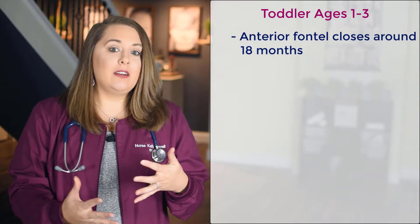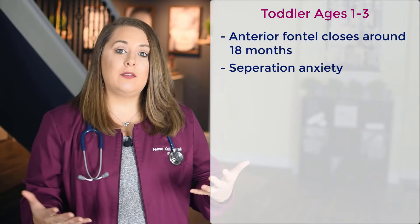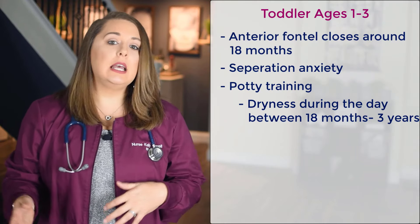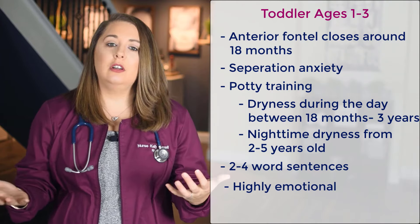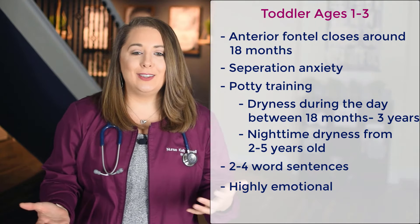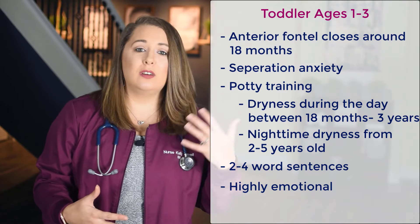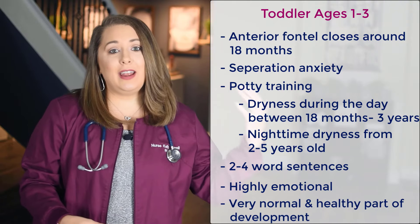Development starts slowing down somewhat going forward. For toddlers between ages one to three, the anterior fontanelle closes around the 12 to 18 month mark, and they will start experiencing more separation anxiety when parents or caregivers leave. This is also the age toddlers start potty training — most will have dryness during the day between 18 months and three years, and nighttime dryness from two to five years old. Toddlers can speak two to four word sentences and are highly emotional. Tantrums are actually a very normal and healthy part of development — they're how toddlers express being upset or frustrated because they haven't learned to control their emotions yet.